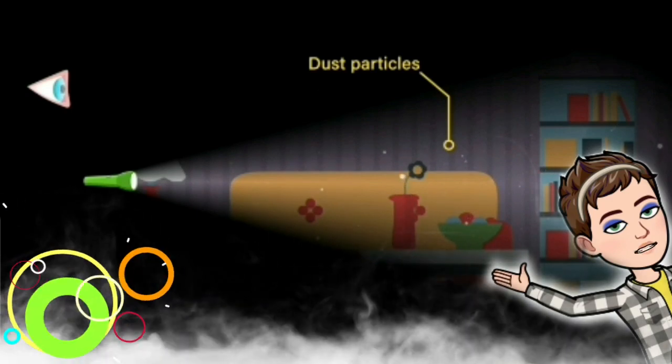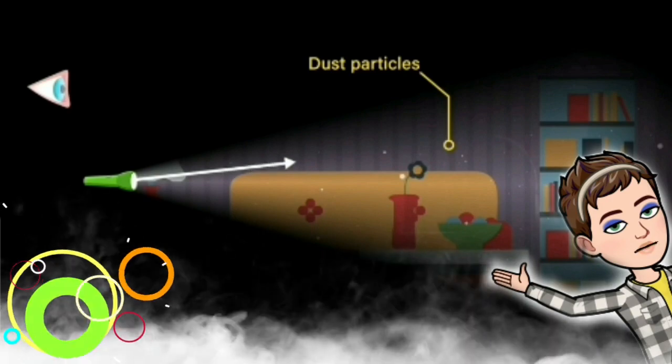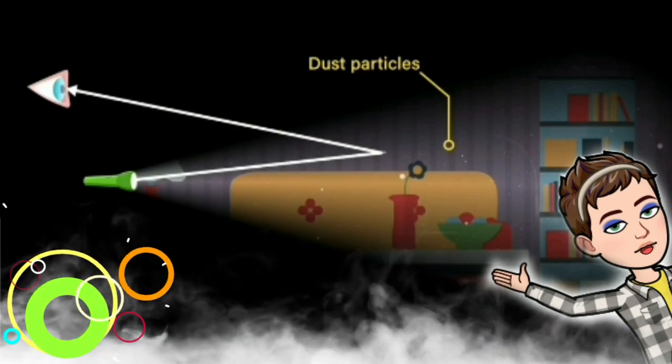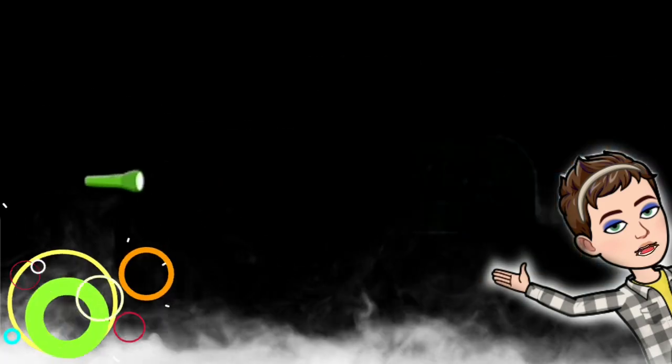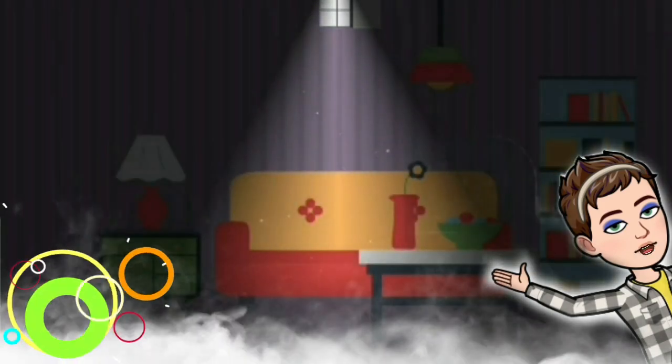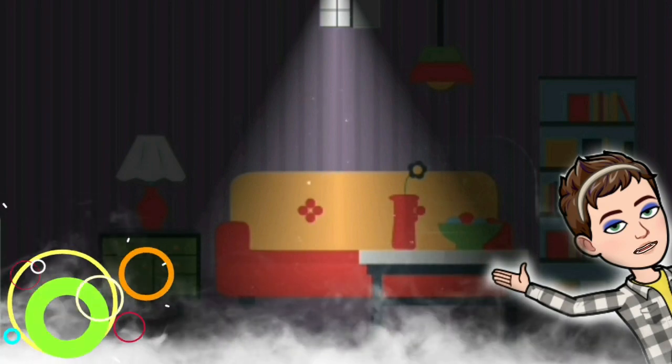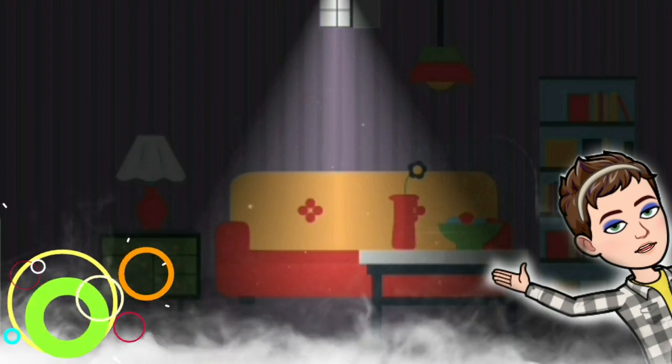You are able to see the dust particles because the light from the torch is getting reflected from their surfaces and traveling towards our eyes. We also see the same thing in a dimly lit room where the only source of light is a very small amount of sunlight coming from the window.